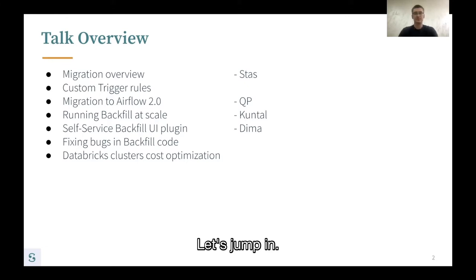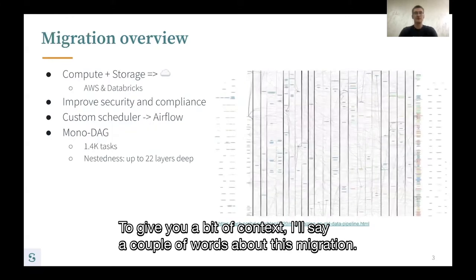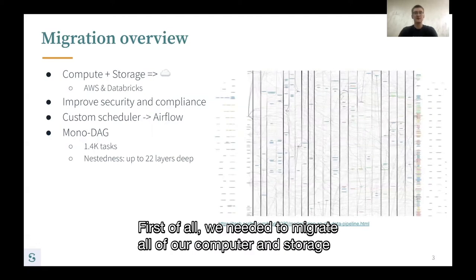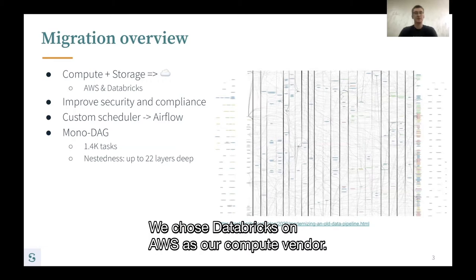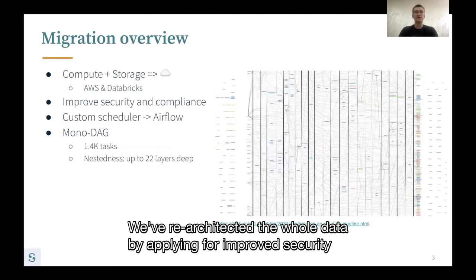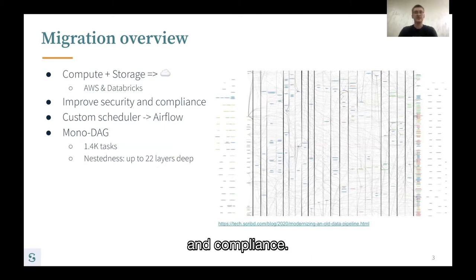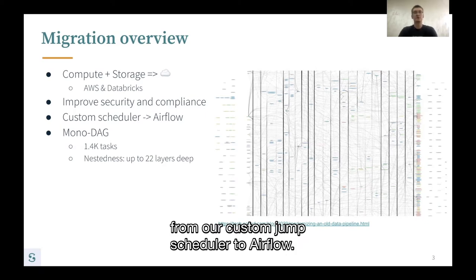Let's jump in. To give you a bit of context, we needed to migrate all of our compute and storage from a legacy data warehouse solution to AWS. We chose Databricks on AWS as our compute vendor. We re-architected the whole data pipeline for improved security and compliance. At the same time, we were switching from our custom job scheduler to Airflow.